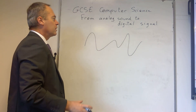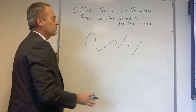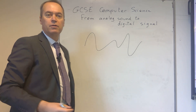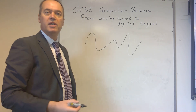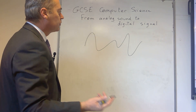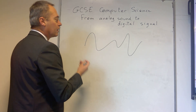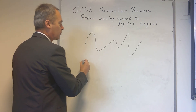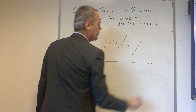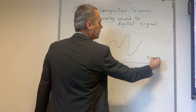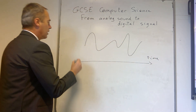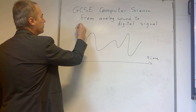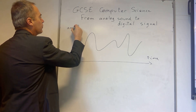Welcome to the screencast. We are looking at how to convert an analog sound wave into a digital signal, which will be made of 0s and 1s. In your GCSE exam, to answer a question like this, you need to remember that the horizontal axis is time and you're going to measure the amplitudes of your sound wave.